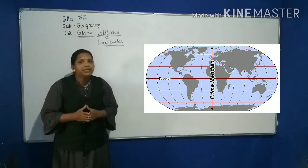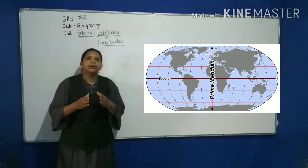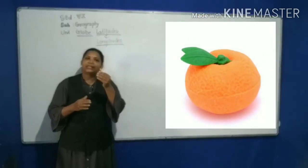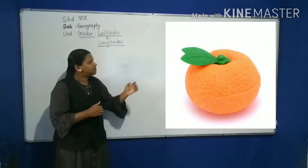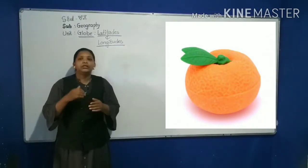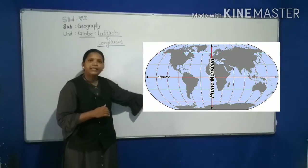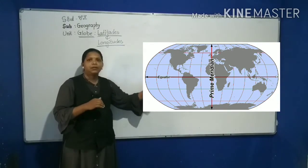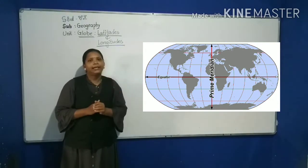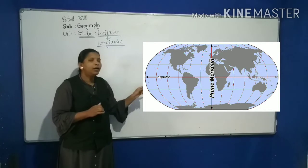Geoid means which looks like an orange. See here. It is slightly flatter on the poles, North Pole and South Pole. This shape is called geoid.